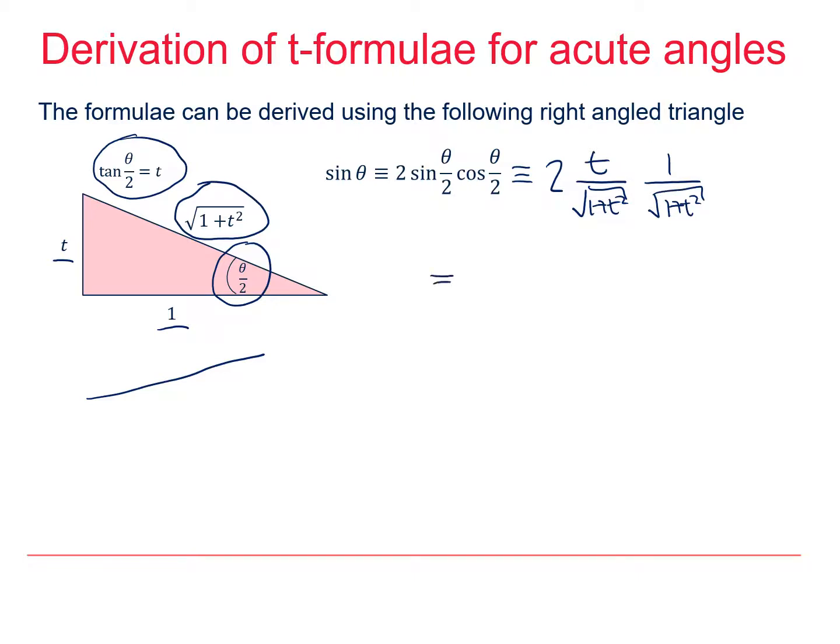Now if I collect those terms together, you can see the numerator is going to be 2t and the denominator is the square of the square root of 1 plus t squared. And there we have sin θ using this acute angle triangle derived in terms of t.